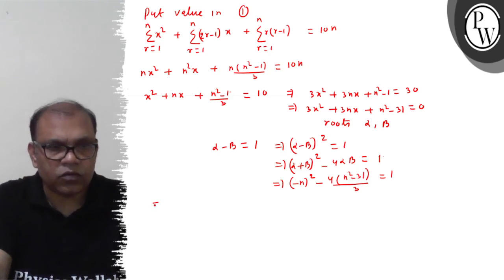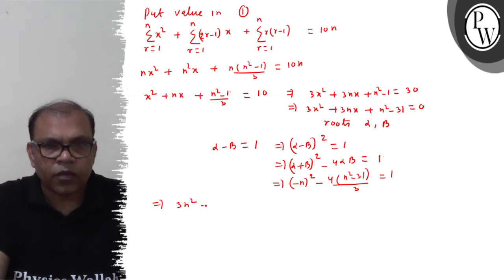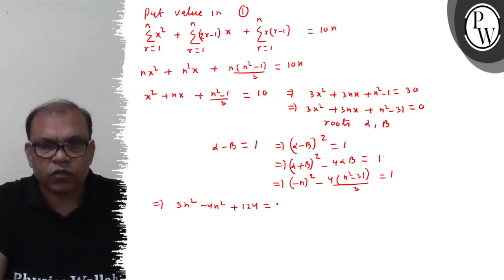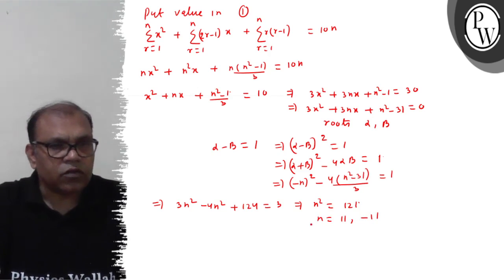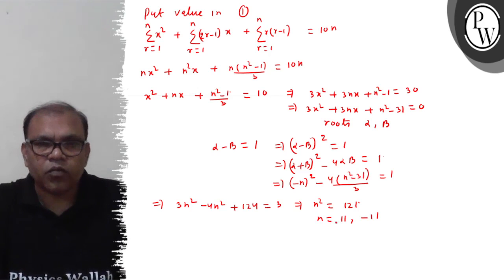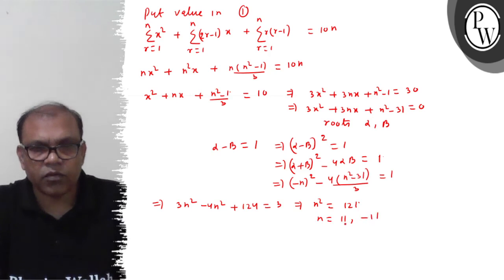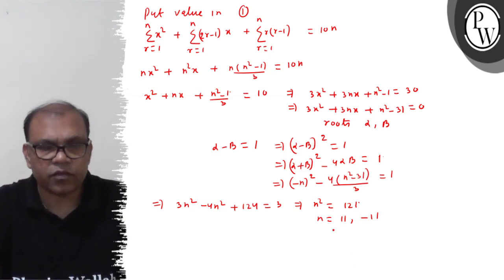Solving: n² - 4 × (n² - 31)/3 = 1, which gives 3n² - 4n² + 124 = 3, so n² = 121. This gives n = 11 or n = -11. Since n is a positive integer, we reject n = -11 and accept n = 11.